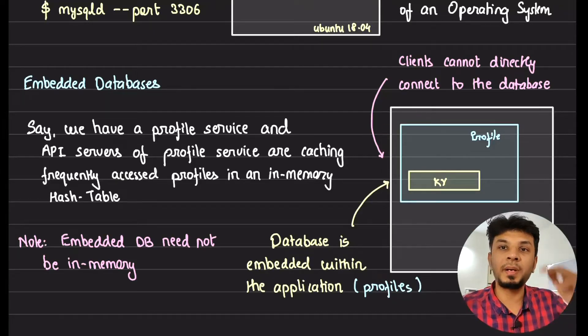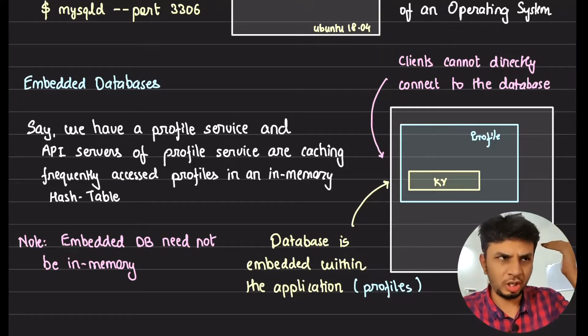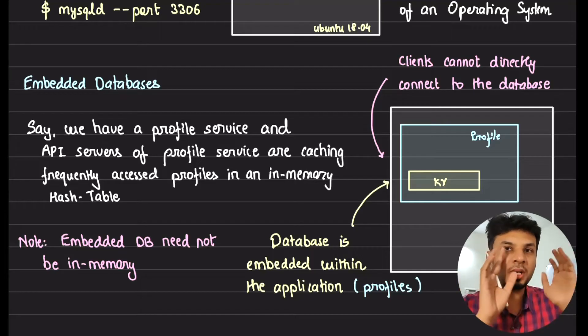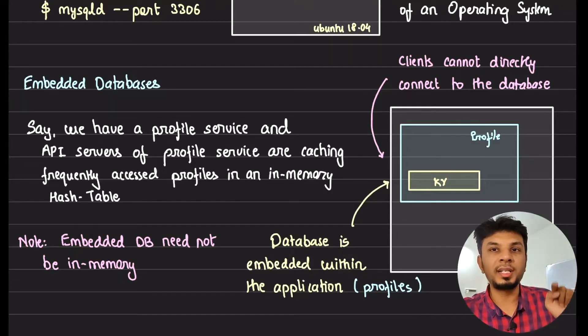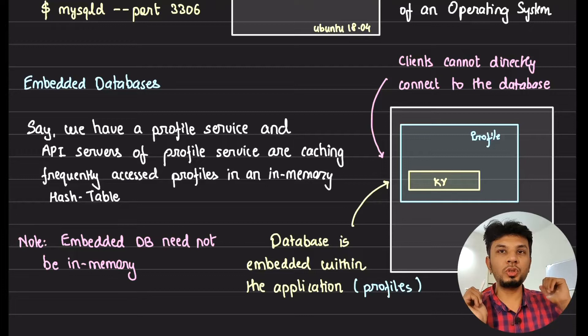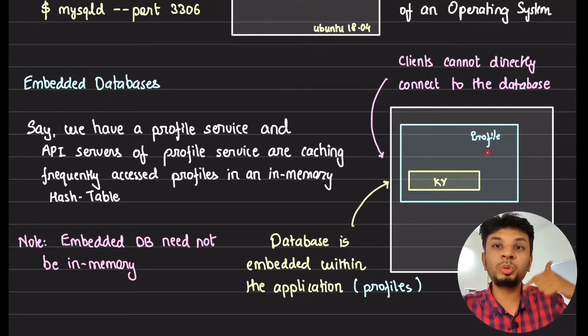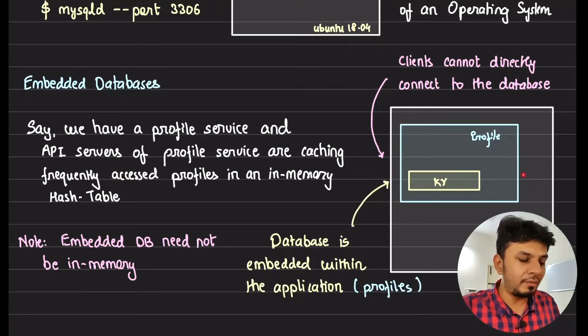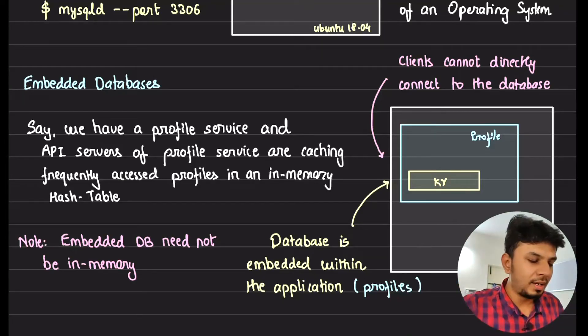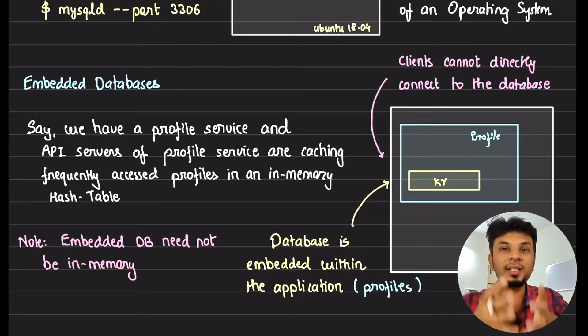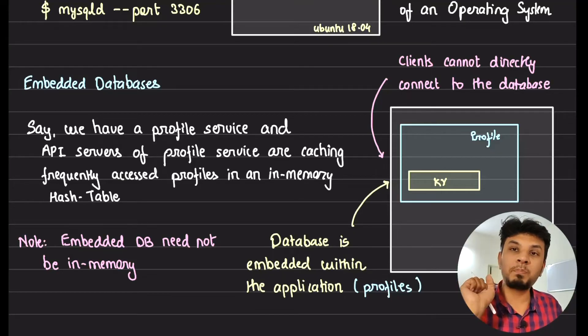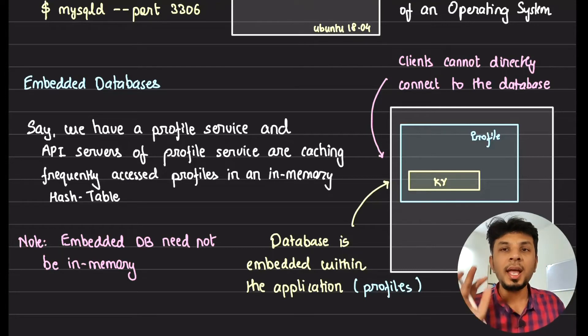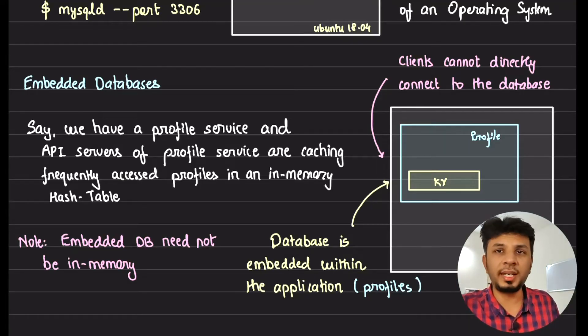Here, if you see your in-memory hash table, which is this particular KV block here, it's contained within the profile service. This profile service is contained within this operating system, your physical EC2 machine. This particular KV store in which you are storing the profile that you just accessed from the DB, you are basically caching it and it is contained within this profile service. Here if someone wants to directly connect to this KV store, they can't. They have to go through the profile service to talk to this. This database is an embedded database because it is embedded within a process. There is no separate process of the database which is spun up. The database is part of the parent process. So if the parent process dies off, no one will be able to talk to your database.